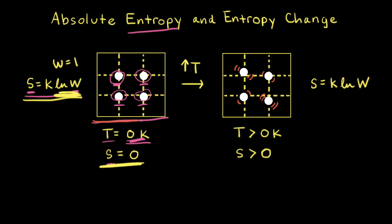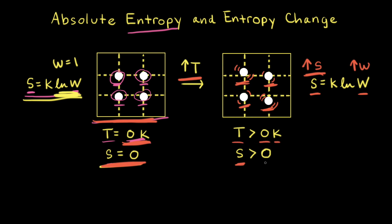If we increase the temperature of our hypothetically perfect crystal, the particles gain energy and have motion around their lattice states. Therefore, there's an increase in the number of possible microstates, which according to the Boltzmann equation also means an increase in entropy. Since we started with zero entropy at zero Kelvin and the entropy increases, at all temperatures greater than zero Kelvin the entropy must be greater than zero — or positive.